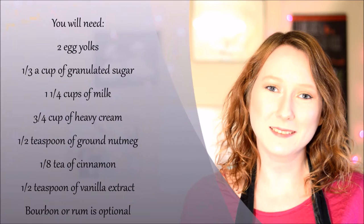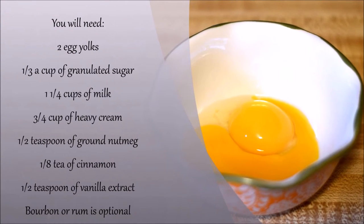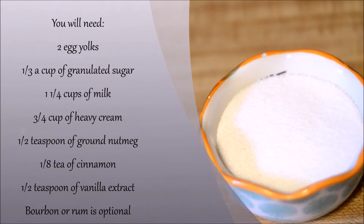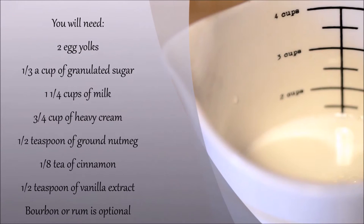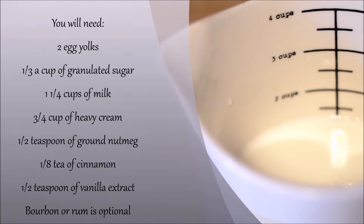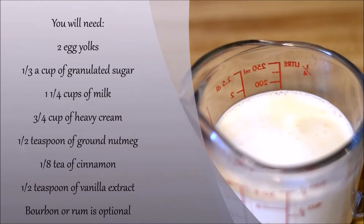To make this homemade eggnog you will need 2 egg yolks, 1/3 cup of granulated sugar, 1 and 1/4 cups of milk, and 3/4 cup of heavy cream.